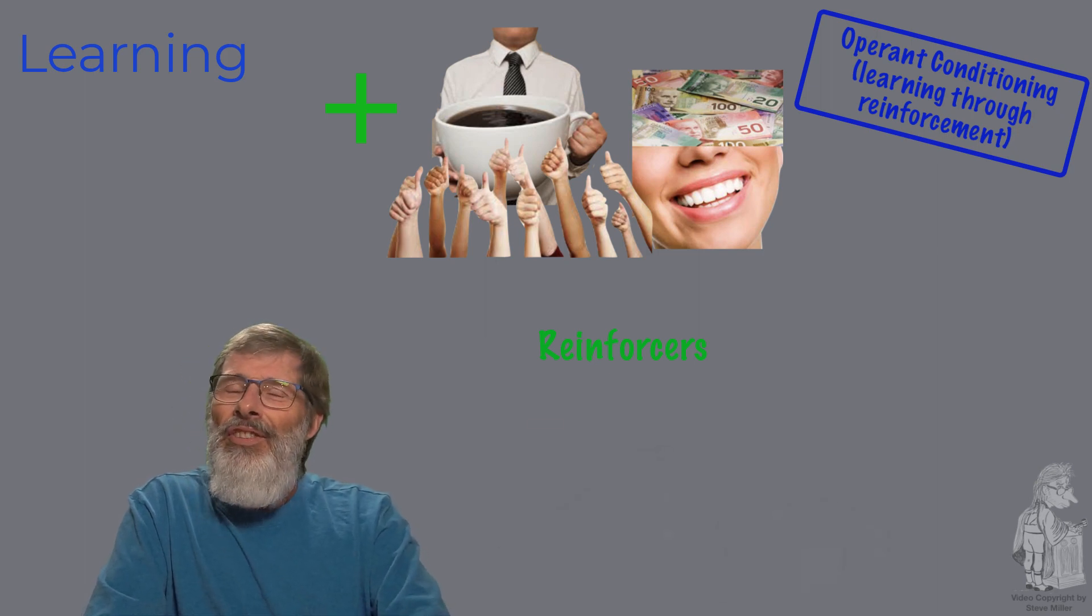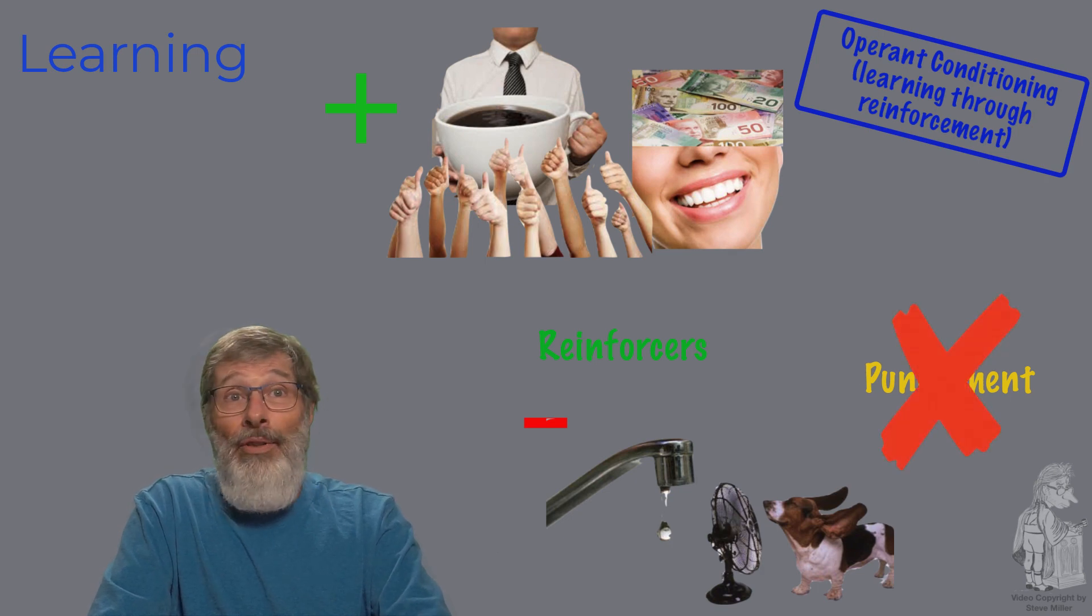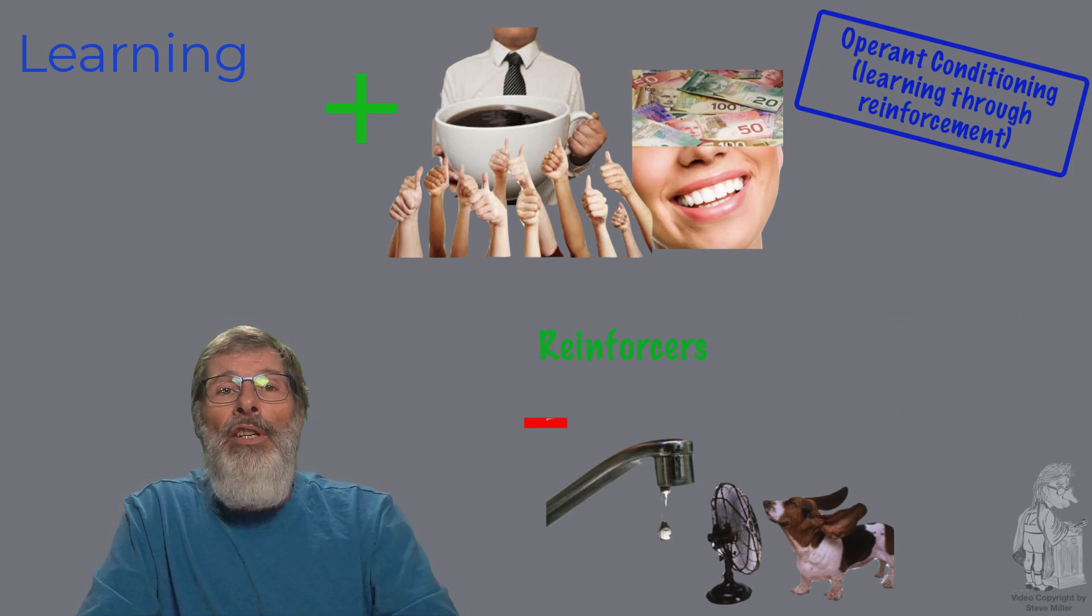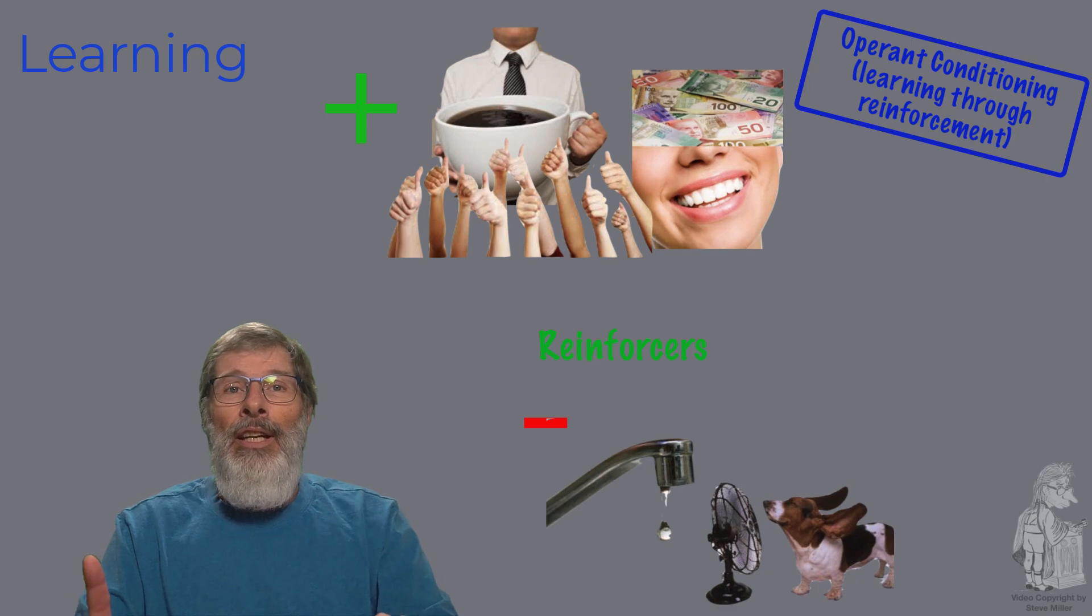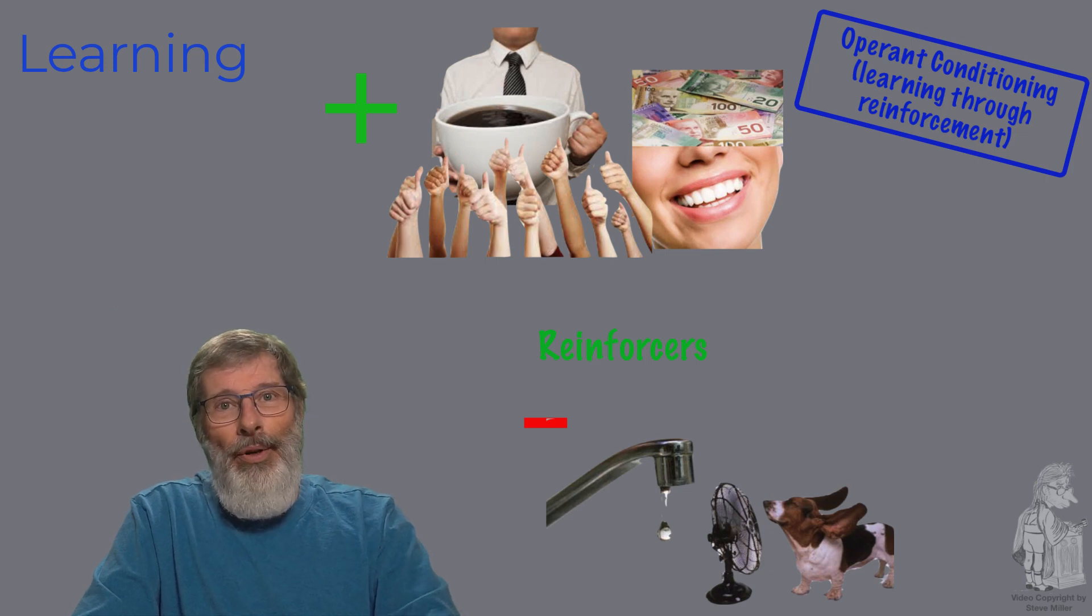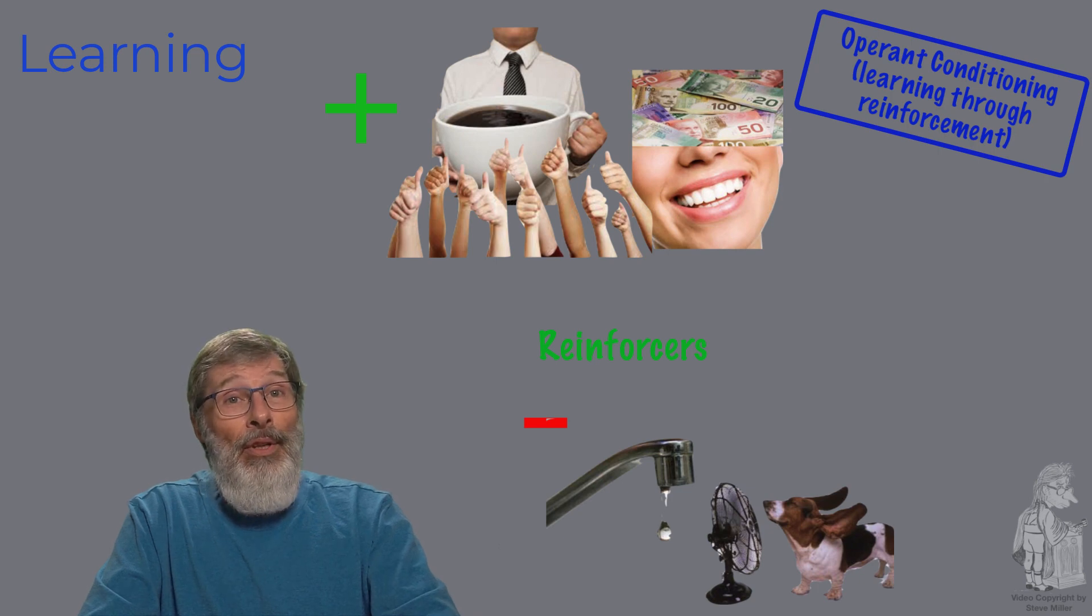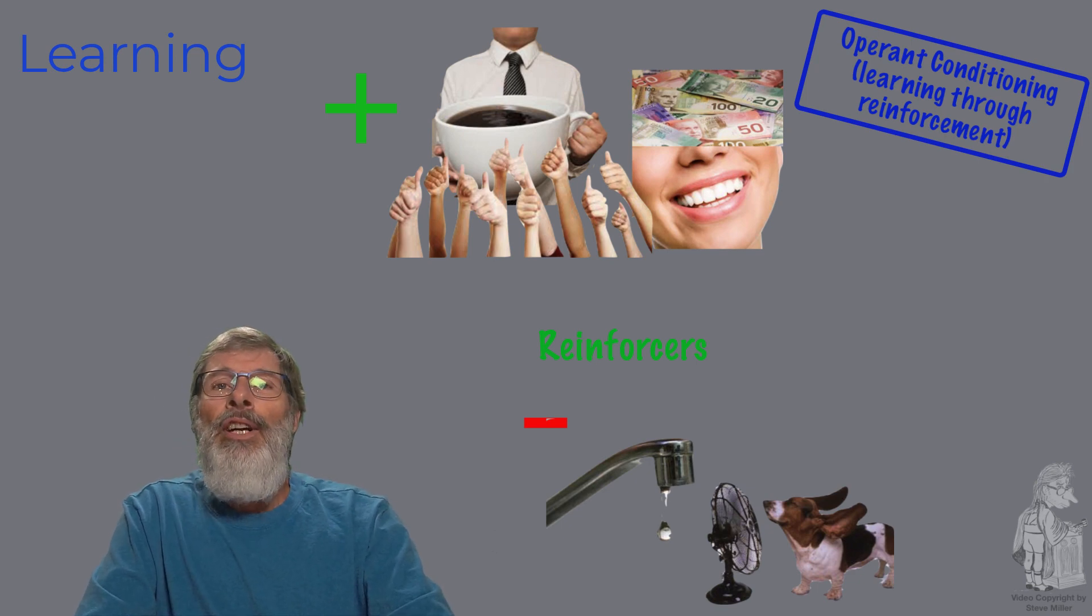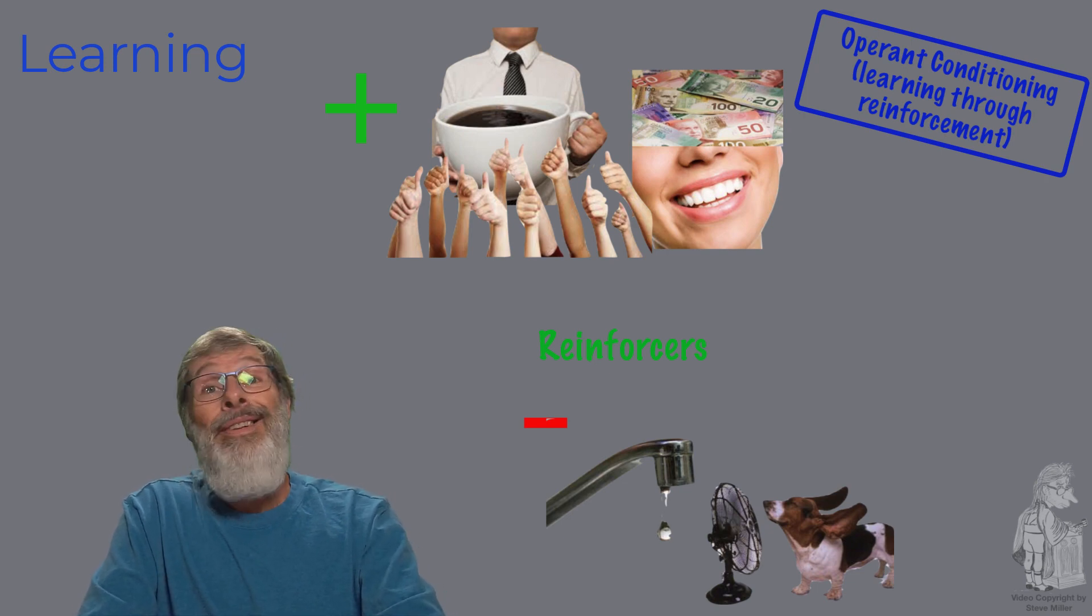Now negative reinforcers, this is often misunderstood. Negative reinforcers or negative reinforcement is not punishment. It does not mean punishment. Negative reinforcement means the termination of unpleasant condition after response. This is key. It increases the probability that the response will be repeated. Turning on air conditioning to avoid the heat is negative reinforcement. Getting out of bed to turn off a leaky faucet is negative reinforcement. Heroin addicts will do almost anything to get another fix and avoid the pain of withdrawal. Negative reinforcement.